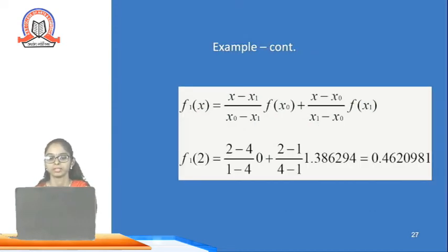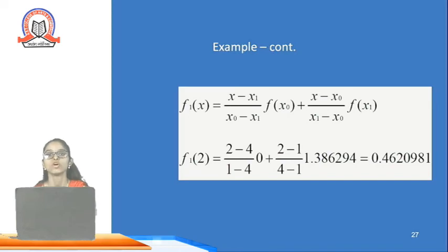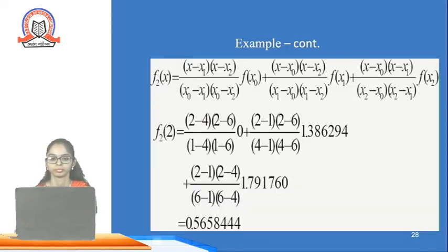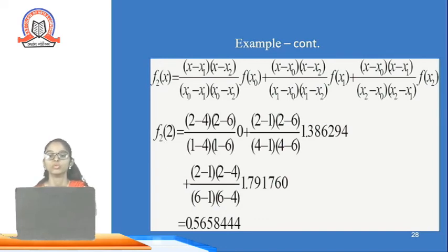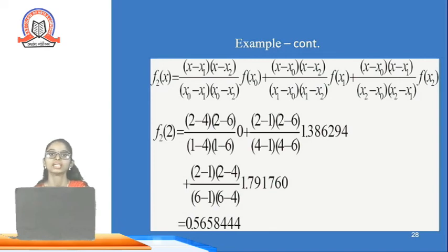Continuing the example: given x₀, x₁, x₂ = 1, 4, 6 with f(x) values 0, 1.3862, 1.7917 — for the quadratic case including f(x₁), the answer is 0.4620981. For the same data finding f at x=2 using the full quadratic formula, the answer is 0.5658444.